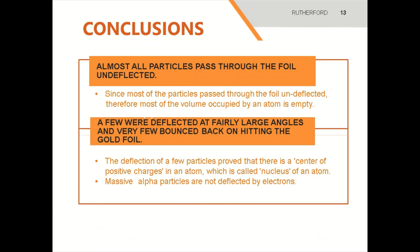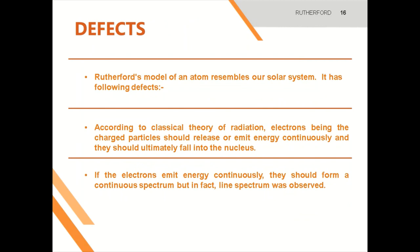Conclusions: Almost all particles passed through the foil undeflected. Since most of the particles pass through the foil undeflected, most of the volume occupied by an atom is empty. A few were deflected at fairly large angles, and very few bounced back on hitting the gold foil. The deflection of a few particles proves that there is a center of positive charges in an atom, which is called the nucleus. Massive alpha particles are not deflected by electrons.